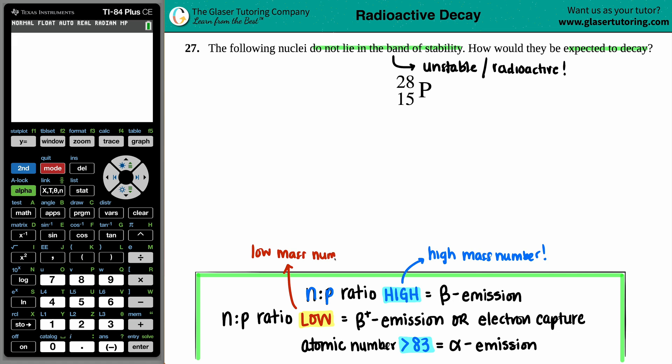So first off, find the mass number that they gave you. The mass number is always going to be the higher number, the larger number of the two values—it's going to be in the upper left-hand corner. So we have a mass number of 28.